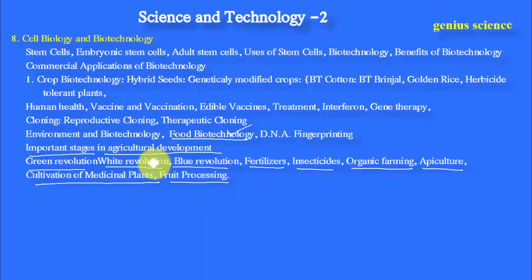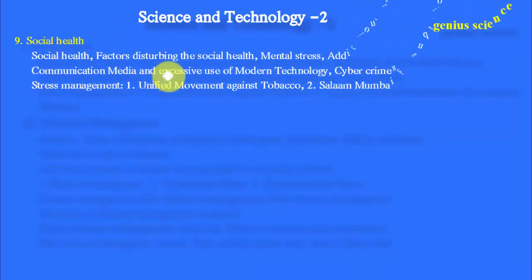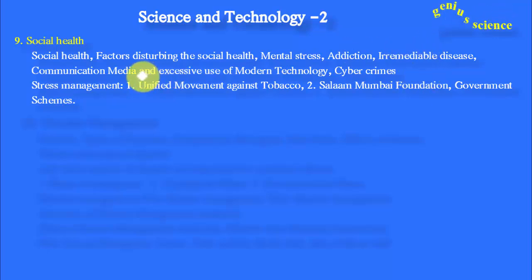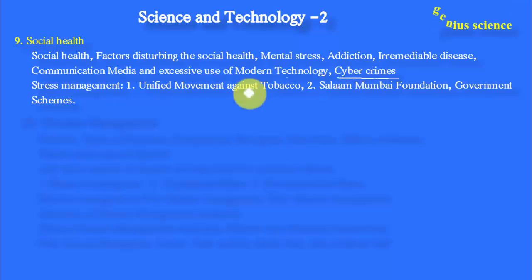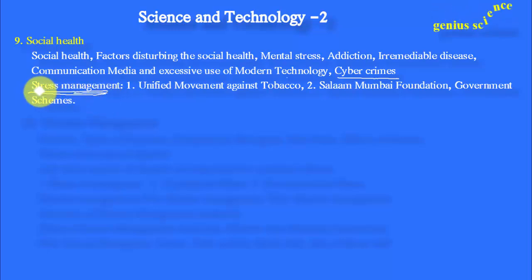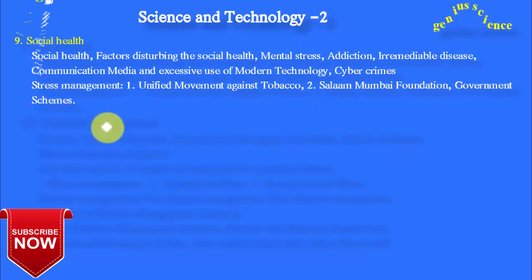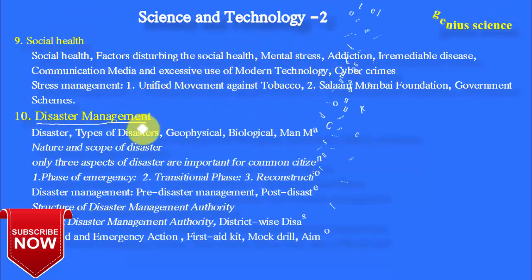If you are unable to cover all these points, you may omit three or four bits from this list. The ninth chapter covers Social Health — topics include Factors Disturbing Social Health, Mental Stress, Addiction, Immediate Decisions, Communication Media, Excessive Use of Modern Technology, and Cyber Crimes. Stress Management is most important for today's life, and questions may be asked on this unit. Also important: Unified Movement Against Tobacco, Salaam Mumbai Foundation, and Government Schemes.